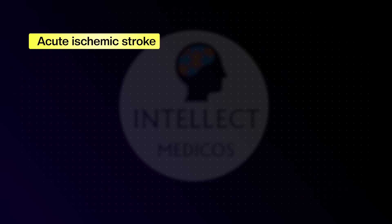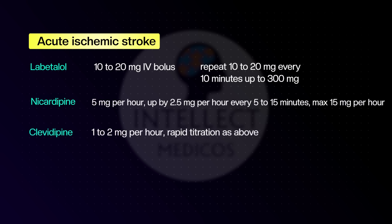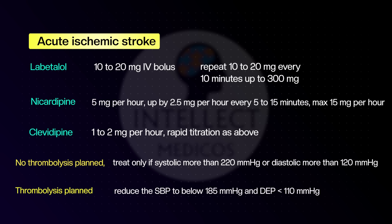For acute ischemic stroke, commonly use labetalol 10 to 20 mg IV bolus, repeating 10 to 20 mg every 10 minutes up to 300 mg. Alternatives include nicardipine or clevidipine. If no thrombolysis is planned, treat only if systolic is above 220 or diastolic above 120. If thrombolysis is planned, reduce systolic to below 185 and diastolic below 110 before giving the thrombolytic agent.